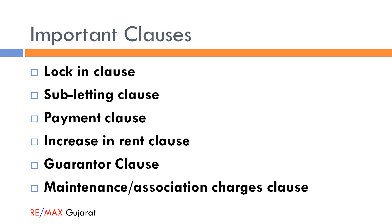Regarding rent increase, landlords may sometimes insert a vague increase clause giving them power to increase rent whenever market prices change. Since perception of market price can widely differ, it is the duty of the licensee or lessee to keep such a clause out of the agreement. Some lease agreements specify a 10% annual increase, in which case it should be clarified whether the increment is simple or compound. For leave and license agreements of only 11 months, rent increase clauses are unusual and should be negotiated hard by occupants; the agreement should specify that no rent increase will occur during the term unless specifically provided.